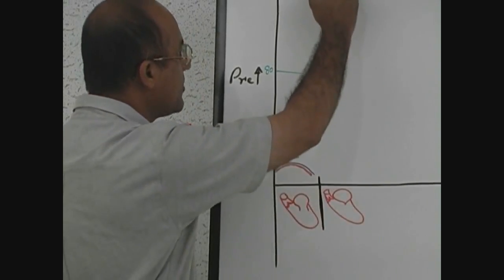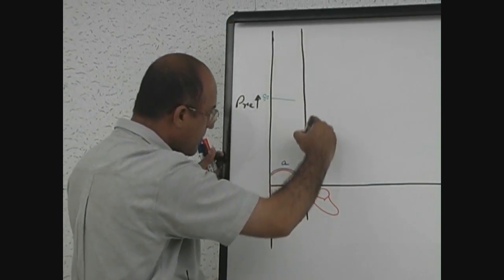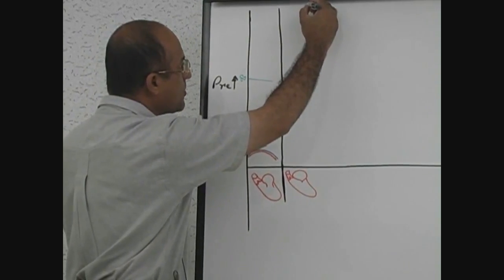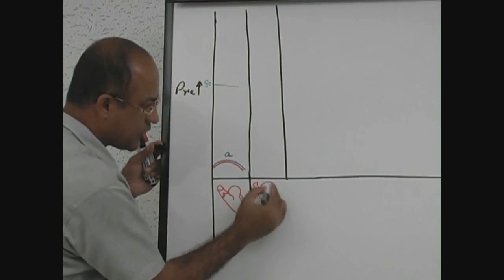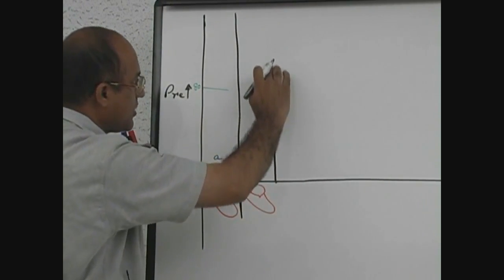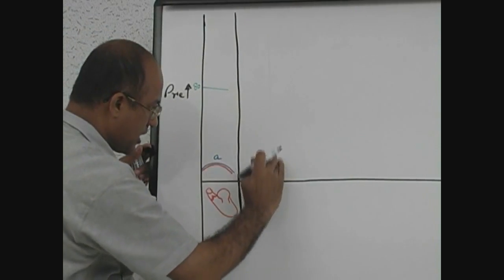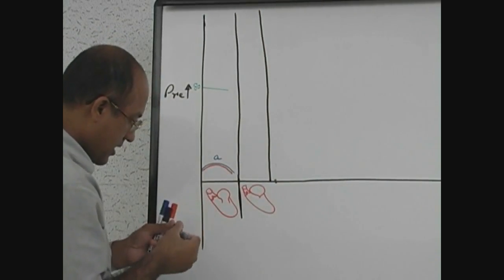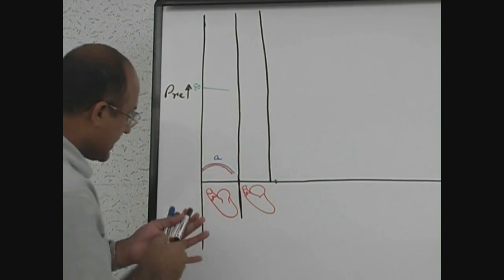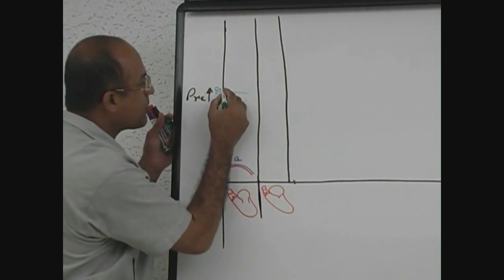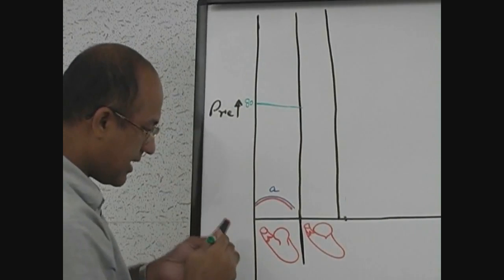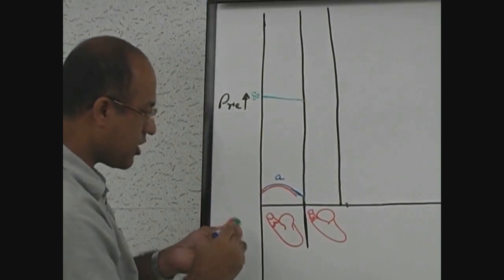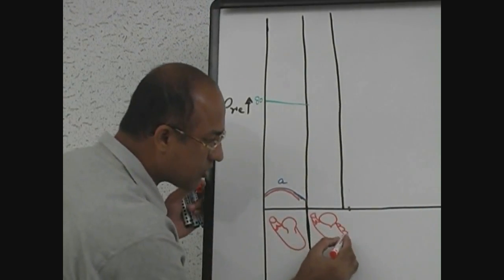This phase is called isovolumetric contraction. On the time scale it has a shorter duration. Here we can see aortic pressure, atrial pressure, and the onset of ventricular contraction plotted on the graph.